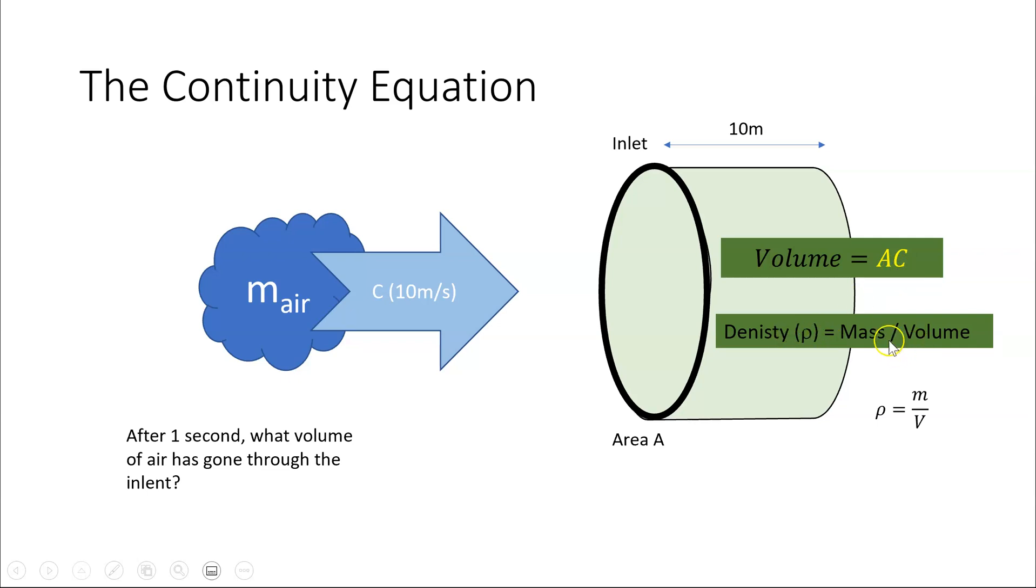But we know that density is equal to mass over volume. And I can rearrange that to say that the mass is equal to the density times the volume. Mass equals density times the volume. And we know that the volume is equal to AC. So that mass of air has gone through this inlet in one second. So we can say that this is the mass flow of air and we put a little dot on it. That's the continuity equation. M dot is equal to rho AC.